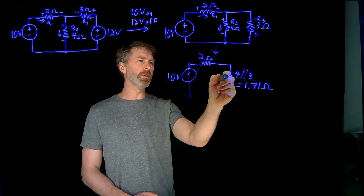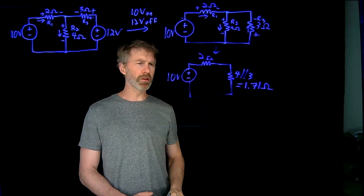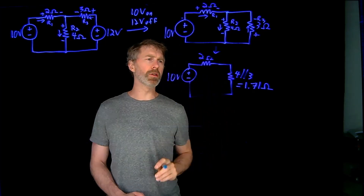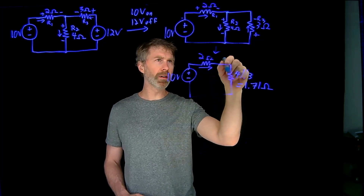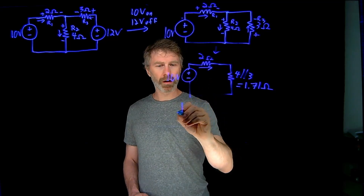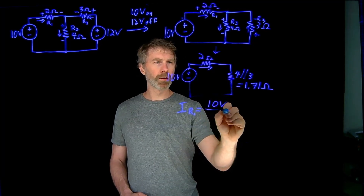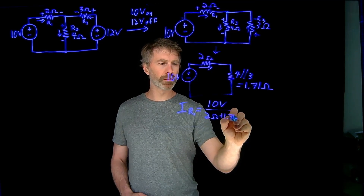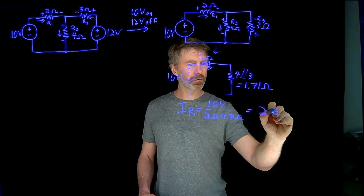The equivalent resistance of the 4-ohm in parallel with the 3-ohm resistor is 1.71 ohms. Now I can figure out the current — IR1, the current going through R1 — which is simply 10 volts divided by 2 ohms plus 1.71 ohms, and that works out to 2.69 amps.